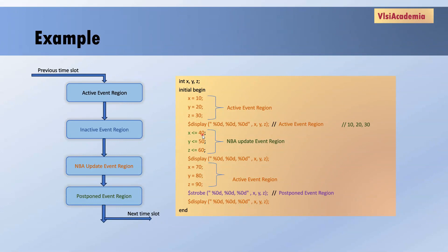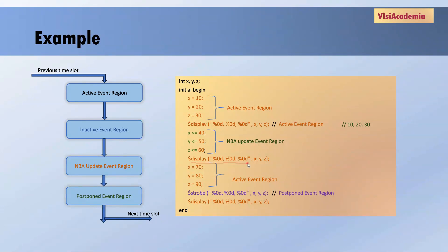Now, the NBA update region comes after the active event region, so it won't be executed yet — only the RHS of the non-blocking assignments will be evaluated, which are 40, 50, 60. Up till now, the update of X, Y, Z has not happened since it comes under the NBA region, and we still have active events in the queue. The next active event in the queue is another $display statement, so it will also print only 10, 20, 30 because X, Y, Z have not yet been updated with 40, 50, 60.